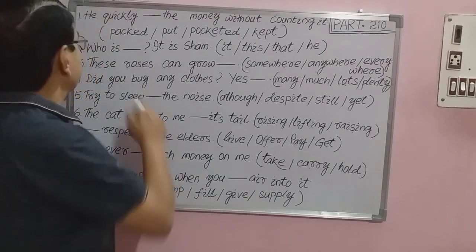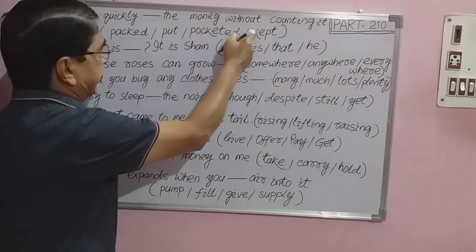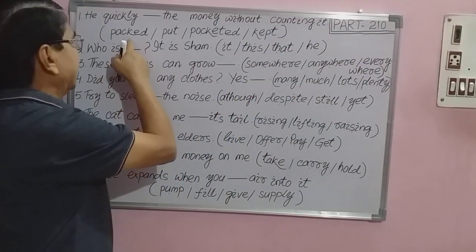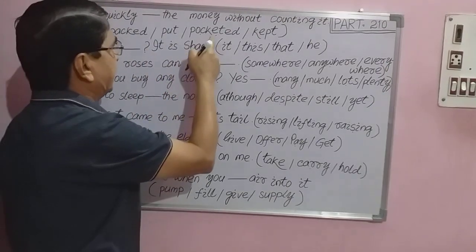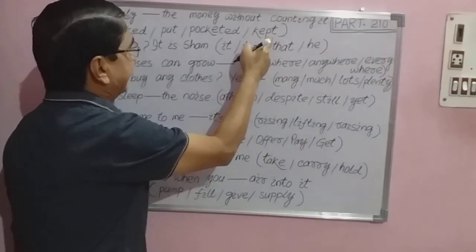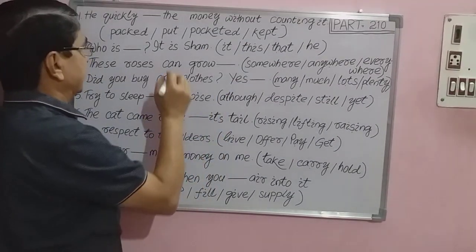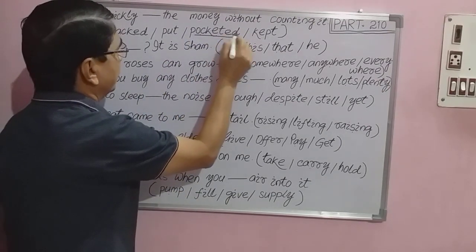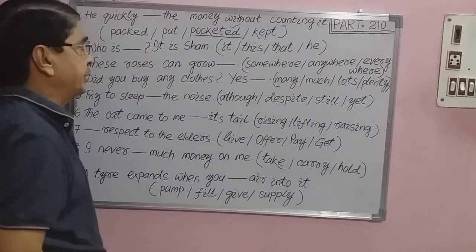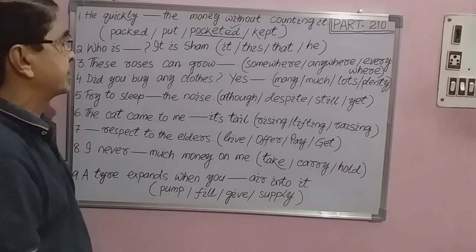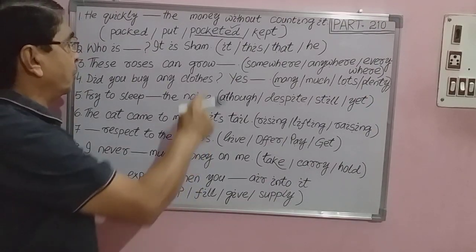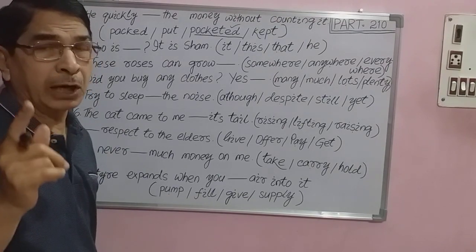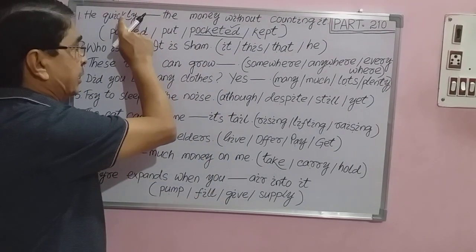Let us start. Question number one: 'He quickly dashed the money without counting it.' Options: A) paid, B) put, C) pocketed, D) kept. The right answer is pocketed. According to the principles of collocation grammar, 'pocketed' is the appropriate word for question number one.